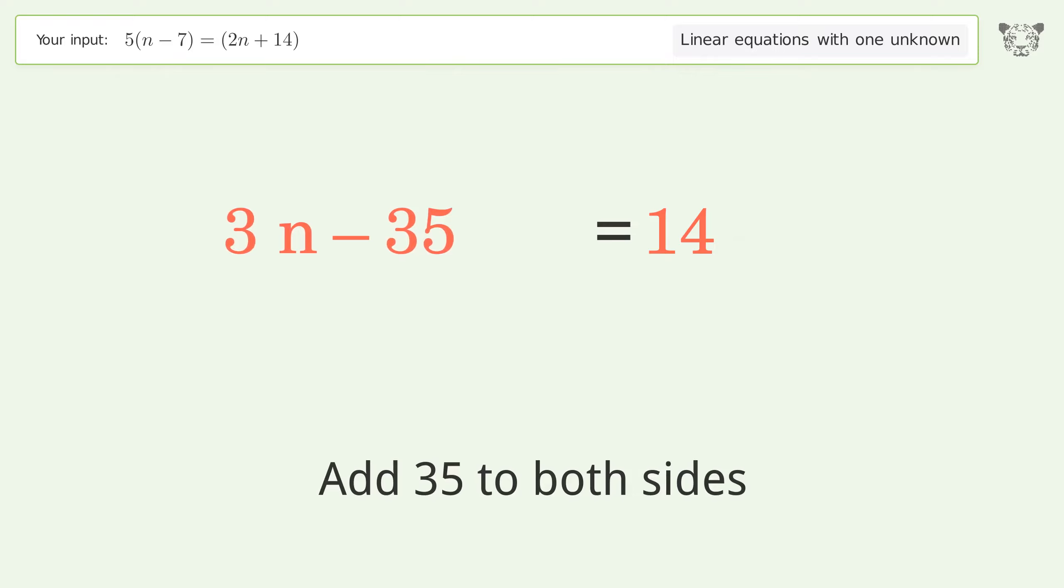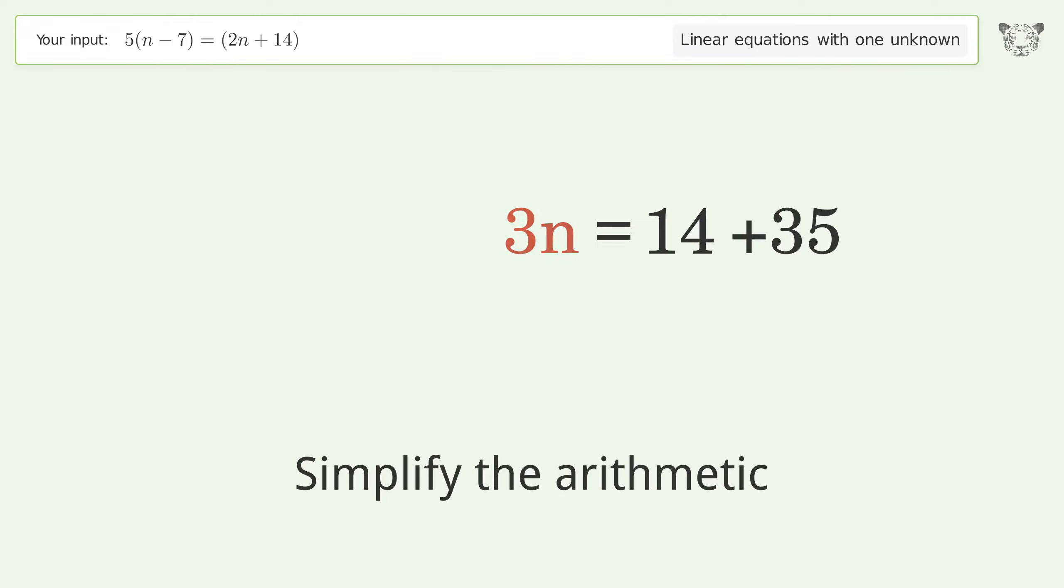Group all constants on the right side of the equation. Add 35 to both sides. Simplify the arithmetic.